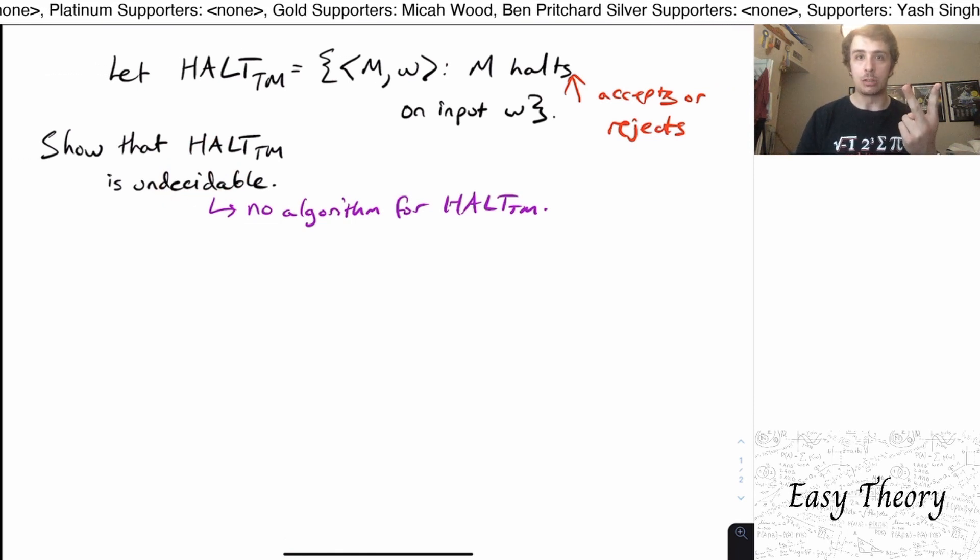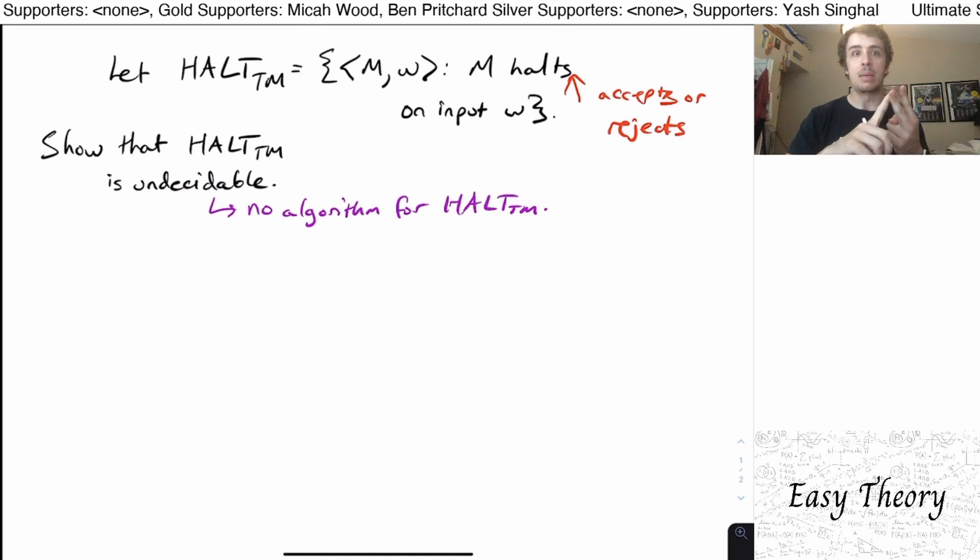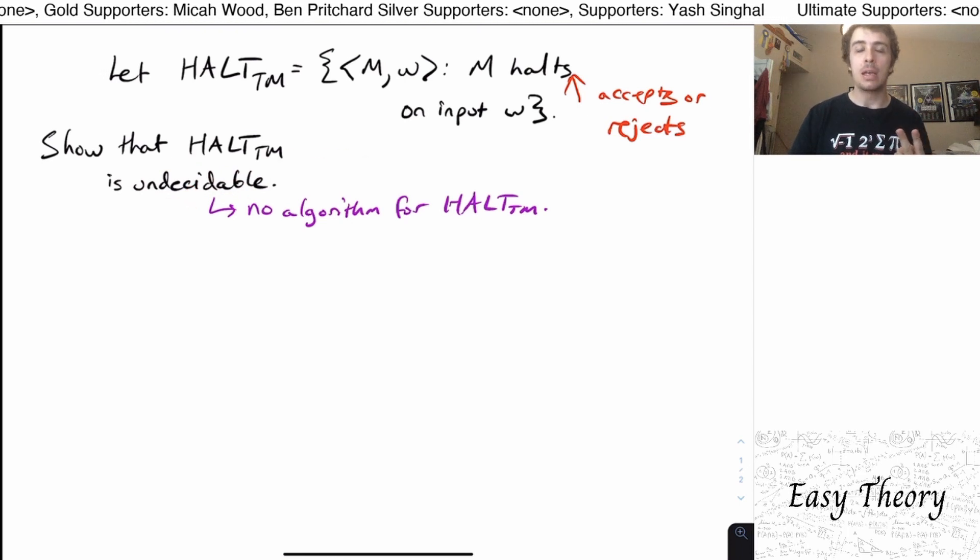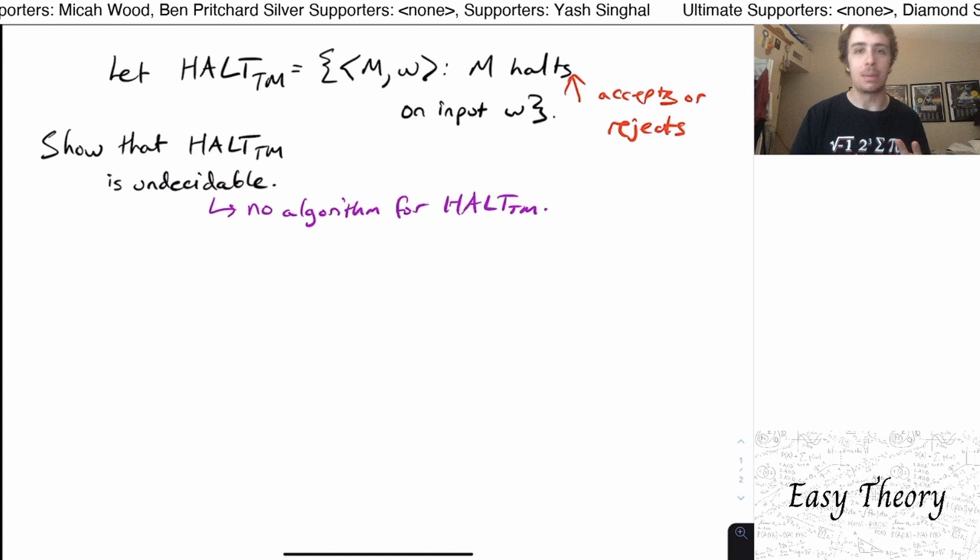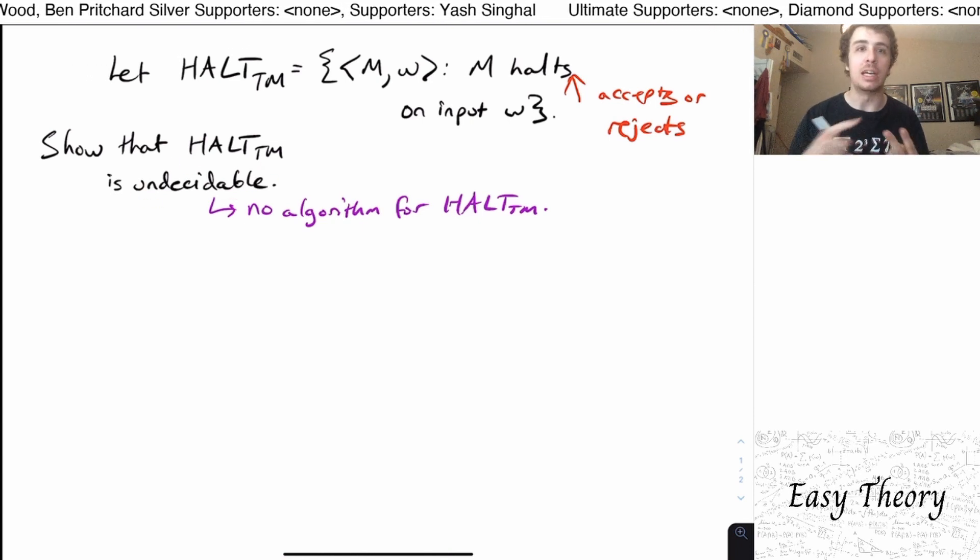Well, there are two main strategies, one that you may use. You can either show that it's undecidable by supposing it's decidable, then showing a known undecidable problem to be decidable under the assumption that this one is decidable. That's one route.